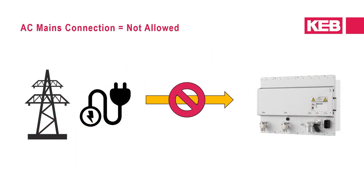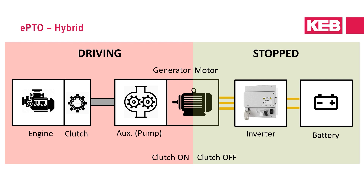As a note, the generator powered EPTO solution does not mean that an AC mains connection can be used as a shore power supply — that has other implications. In between the two previous examples is a hybrid solution, which allows the system to run from battery power when the engine is off and operate via mechanical PTO while driving when the engine is at a more efficient operating point. With the mechanical PTO engaged while driving, the generator can also charge the battery, allowing a smaller battery to be utilized. Regenerative braking can also contribute to reducing the battery size.